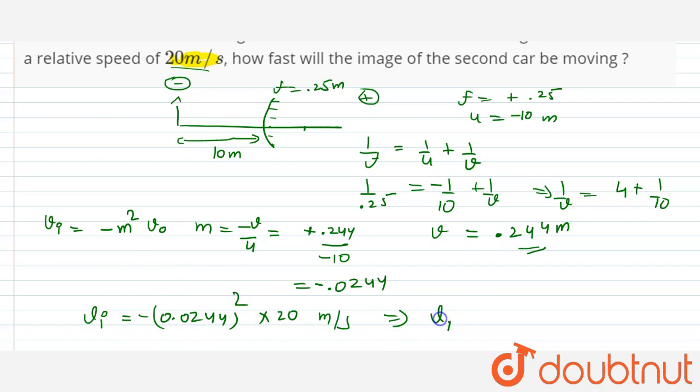The velocity of image is minus approximately 1.9 into 10 raised to power minus 2 meter per second. So our image velocity is 1.9 into 10 raised to power minus 2 meter per second.